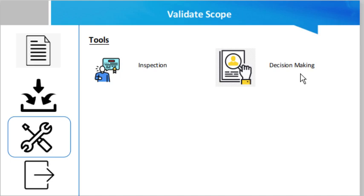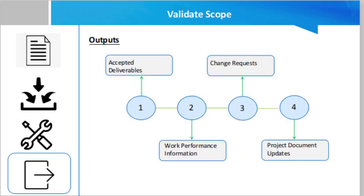Decision making techniques evaluate alternatives in a group setting and reach an agreement leading to a final decision that delivers the desired objectives. The first output of this process is accepted deliverables — deliverables that meet the acceptance criteria of the project management plan and are approved by the appropriate stakeholders. Getting approval is the primary output of this process and is typically performed by the project manager, the customer, the sponsor, and the functional or operational manager.